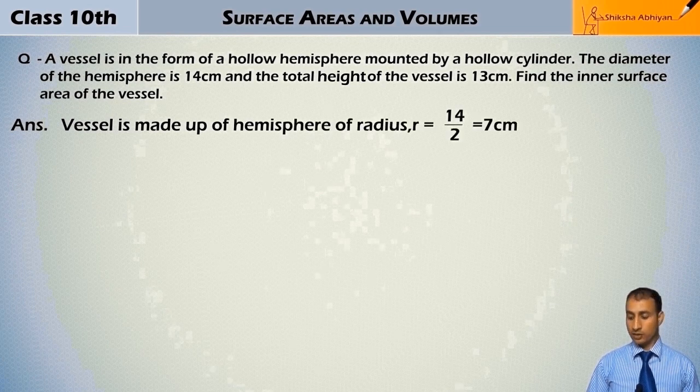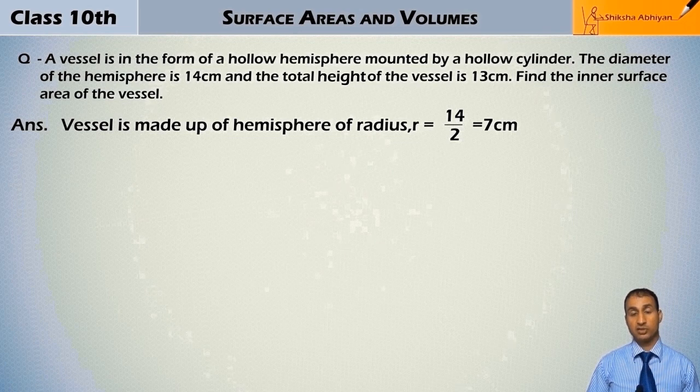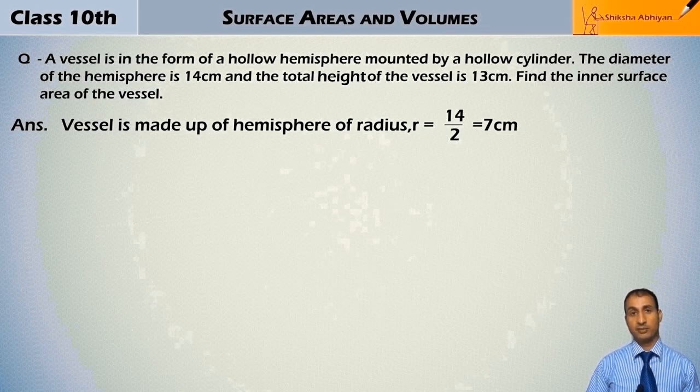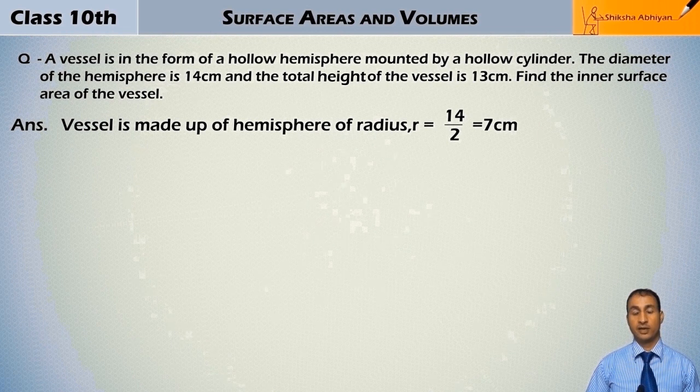So radius is how much? 14 divided by 2 is 7 cm. And this length, this side with height, this length will be equal to the radius, 7 cm. Now see, in the cylinder, this cylindrical part of the vessel.